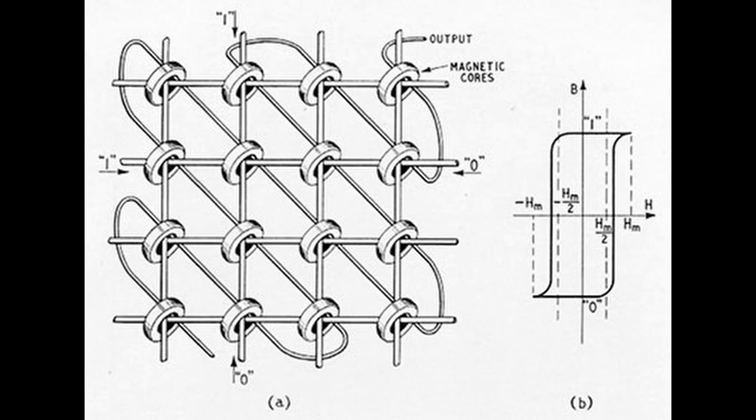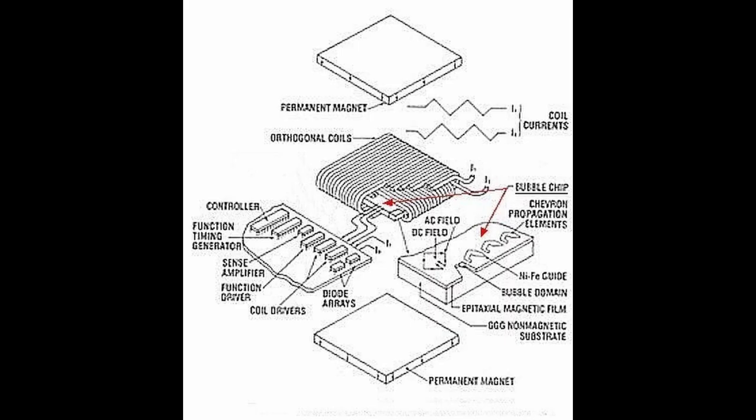In the 60s and 70s, semiconductor memory technologies began to emerge. The first type of semiconductor memory was called magnetic bubble memory, which used tiny magnetic domains that could be shifted back and forth to represent binary data.